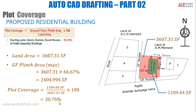The regulation says plot coverage should not exceed 66.67%, and our result is 30.76% — well below the limit. So there's no issue with this arrangement and it can be approved. That's all for this lecture. In upcoming lectures, we'll cover rear space, internal height, natural lighting, ventilation, and more.